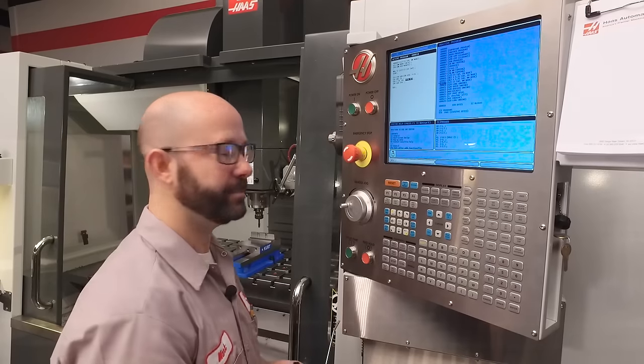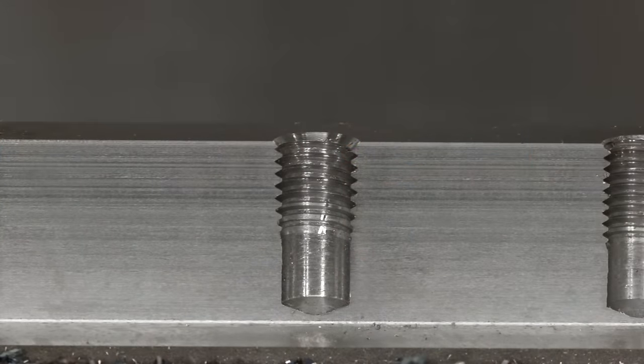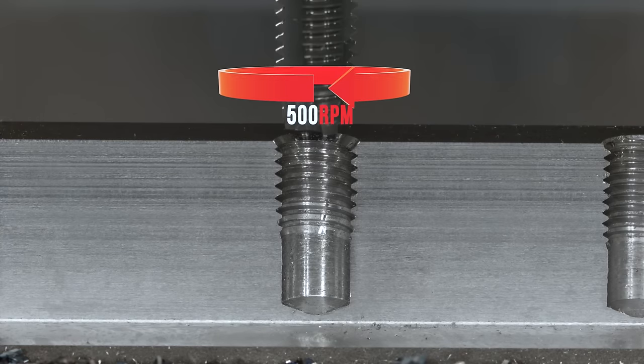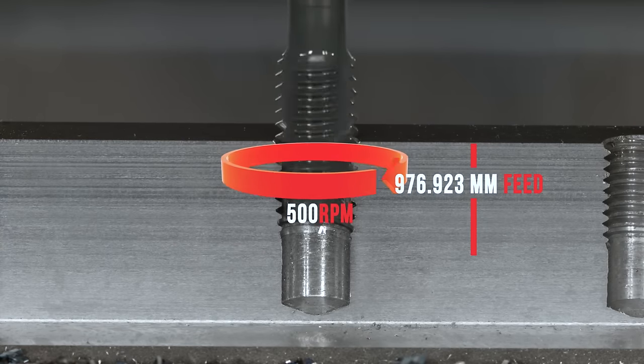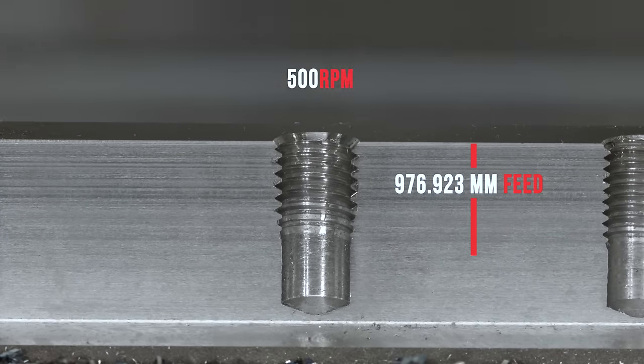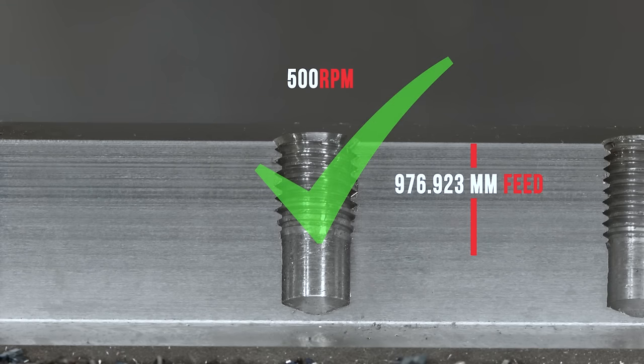Let's go ahead and watch it run. We've got our 1.5-13 inch tap threading this hole at 500 RPMs and feeding at 976.923 millimeters. That feed rate and the RPM match perfectly to give us our 13 TPI.